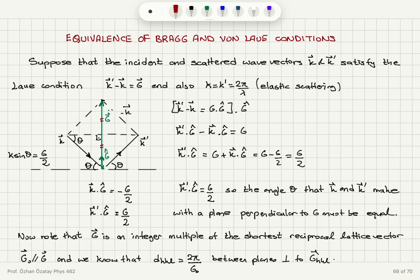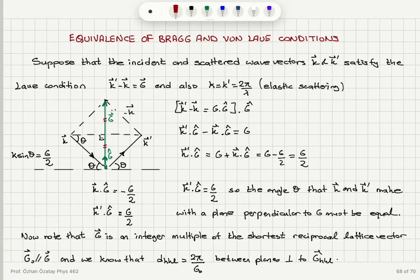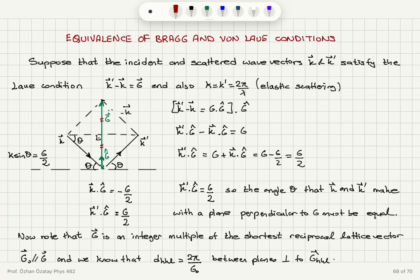So the angle theta that k and k prime make with the plane perpendicular to g satisfies k sine theta equal to g over 2. Now, g is an integer multiple of the shortest reciprocal lattice vector g₀, which connects two consecutive nearest reciprocal lattice points.